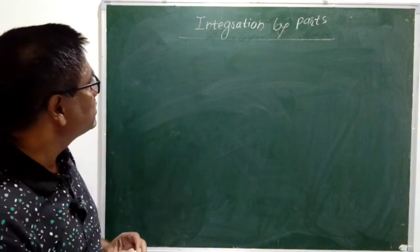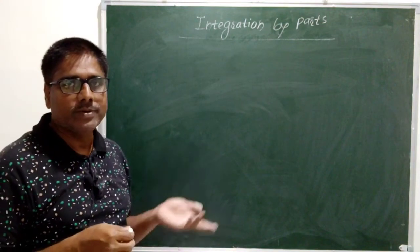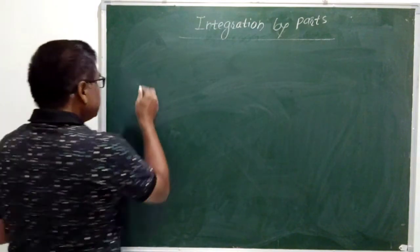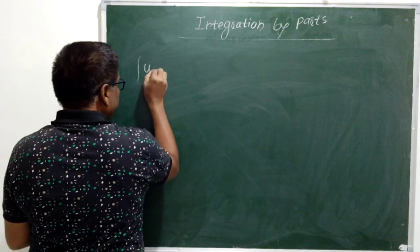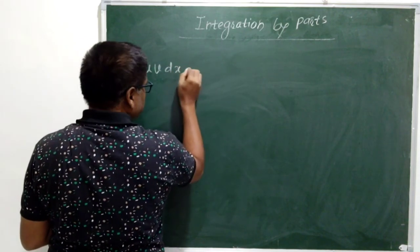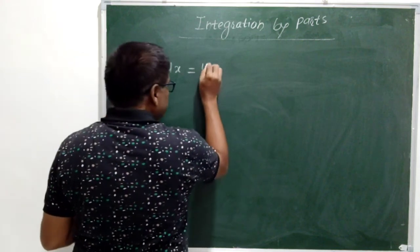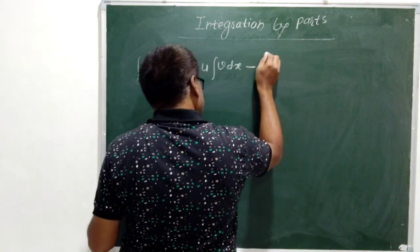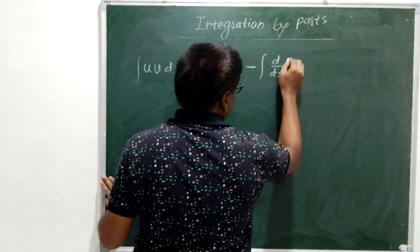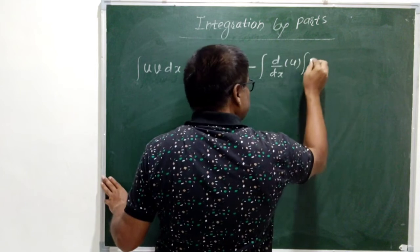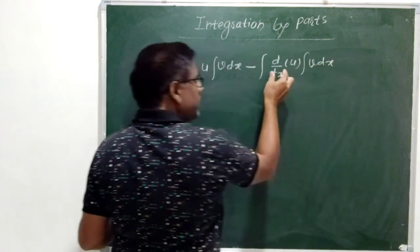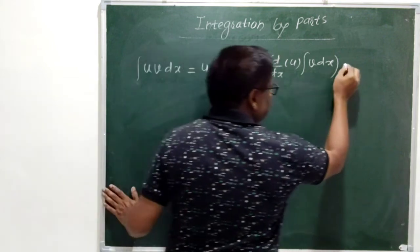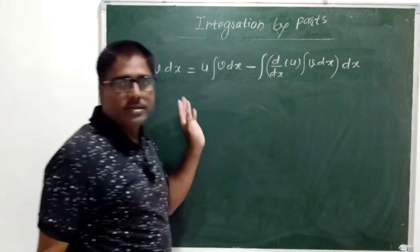Hello friends. In this video let us discuss the integration by parts formula. We use the by parts formula whenever we have two different functions in multiplication under integration. The by parts formula is: integration of u into v equals first function into integration of second, minus under integral derivative of first (d/dx of u) then integral of second (v dx). After finding derivative of first and integration of second, we have to solve this integral. This is the by parts formula.